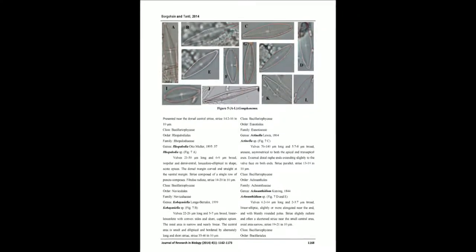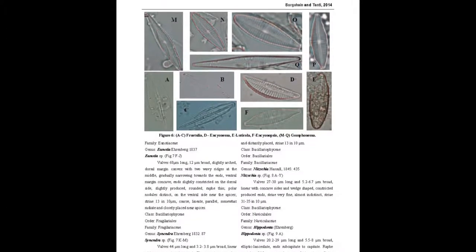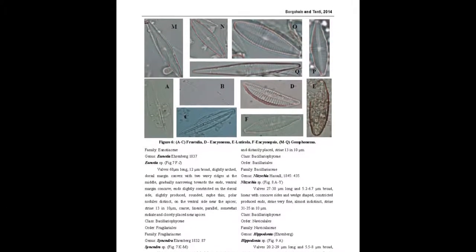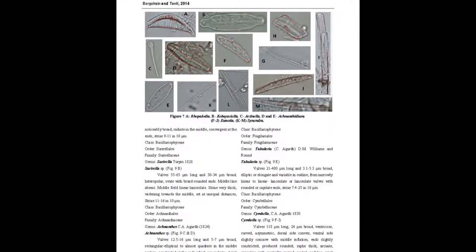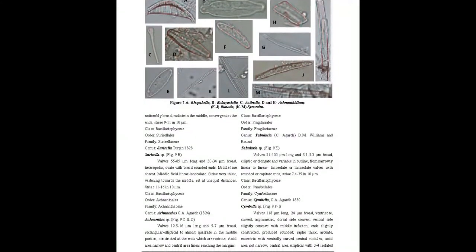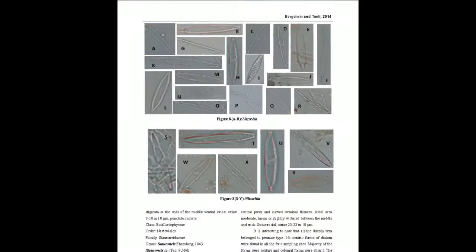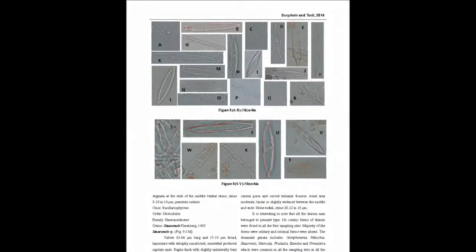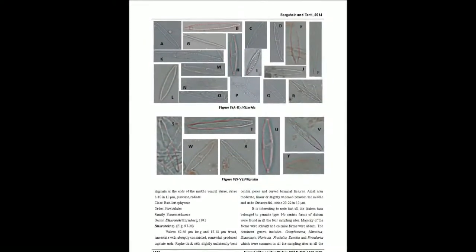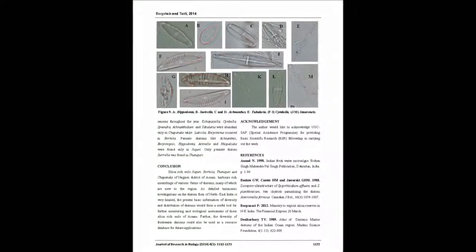The dominant genera include: Stauroneis, Cobiostela, Eunacea, Pinnularia, Nitzschia, Gomphonema, Frustulia, Subryla, Diatoms, Propylogia, Navicula, Synedra, Encyonema, Diatoms avium, Cymbella, Hippodonta, Tabularia, Bactamela, Encyonopsis, and Velticula. Notably, all the diatom species belong to the pennate type.